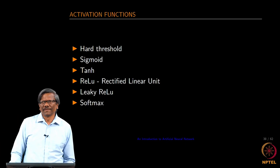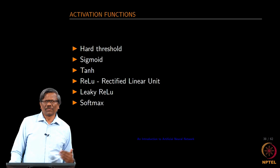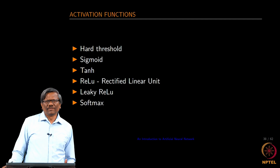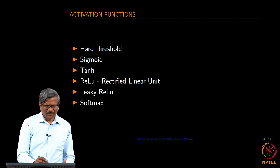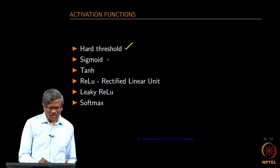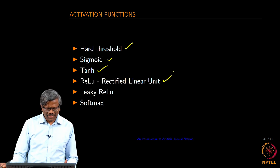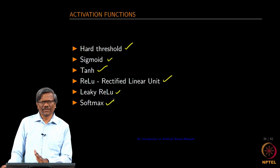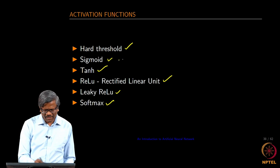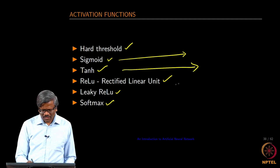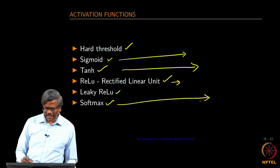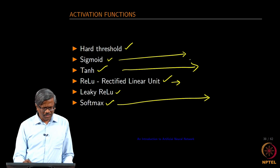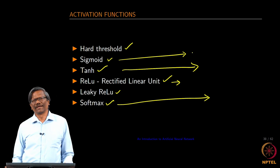The next important aspect in the neural net is the activation function. We spoke about the activation function even in the perceptron, but there we only spoke about one simple activation function — the hard threshold. Now we are going to be talking about sigmoid, hyperbolic tangent, rectified linear unit, leaky rectified linear unit, and finally softmax. Sigmoid and softmax are very useful — softmax is usually used at the output layer, while sigmoid, tanh, and ReLU are used in the hidden layers.